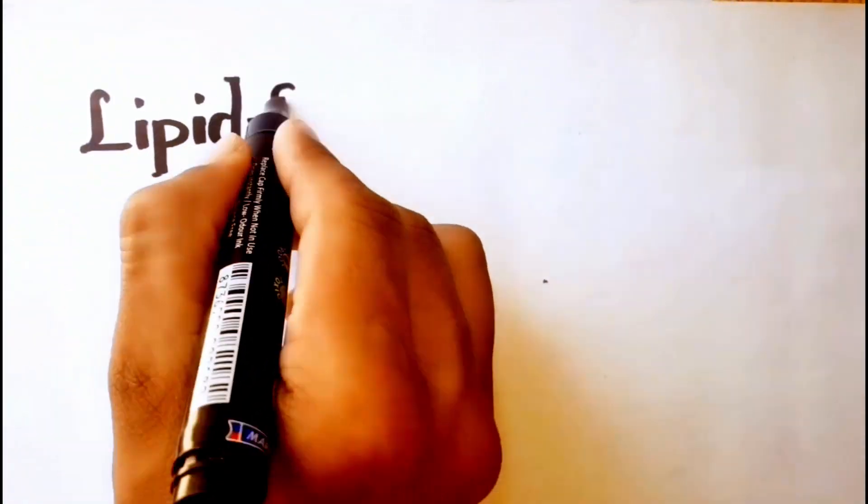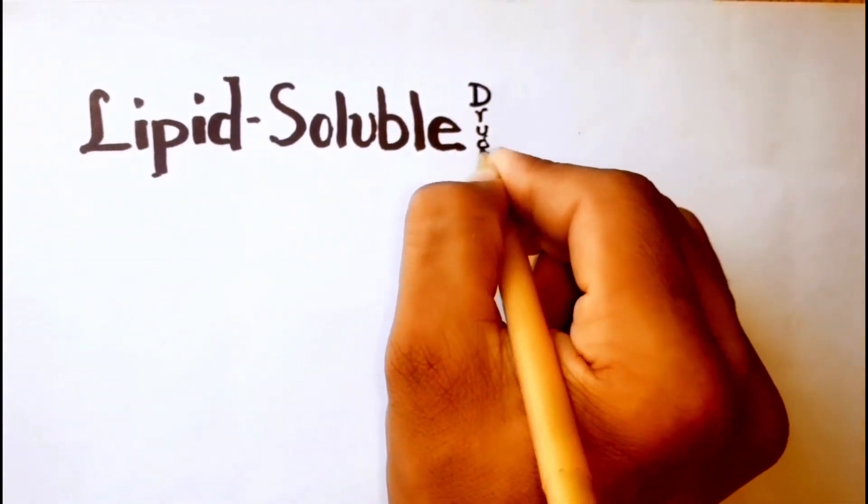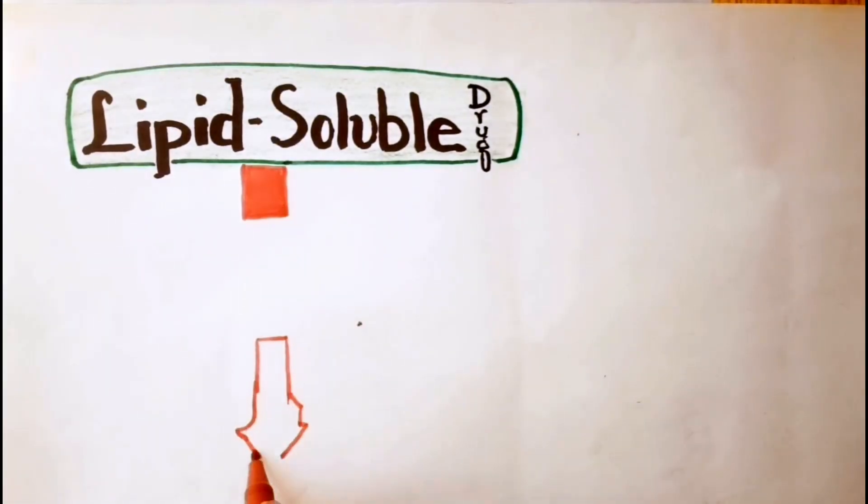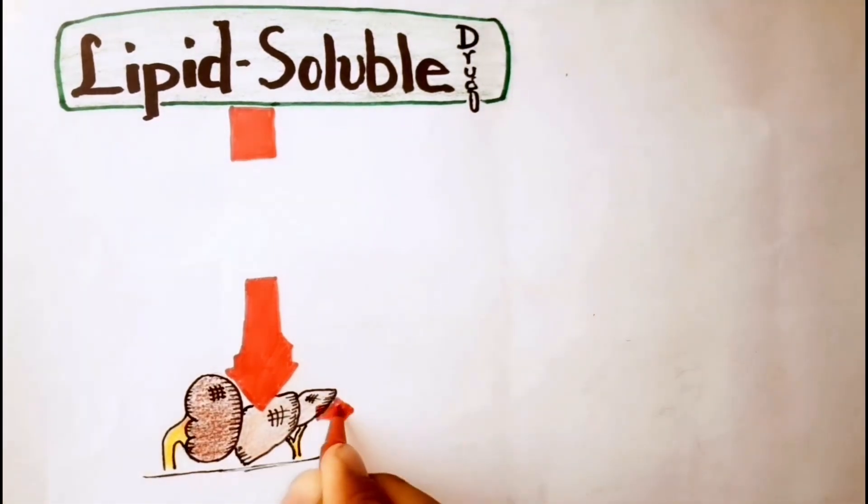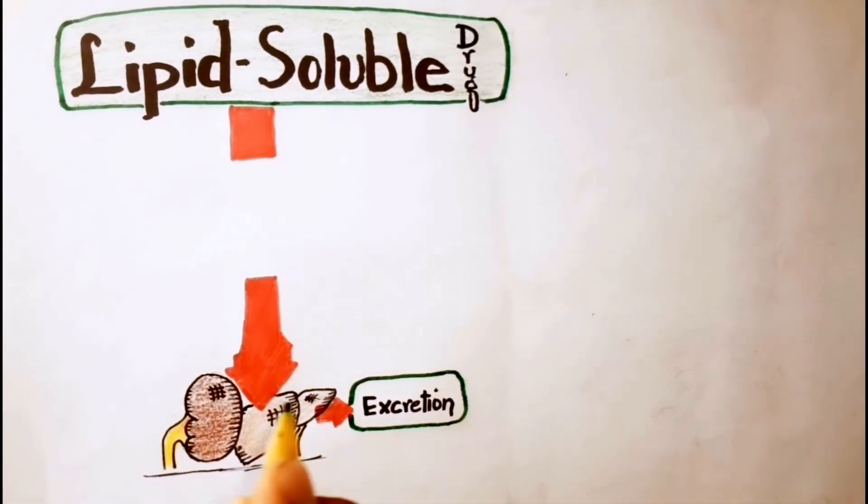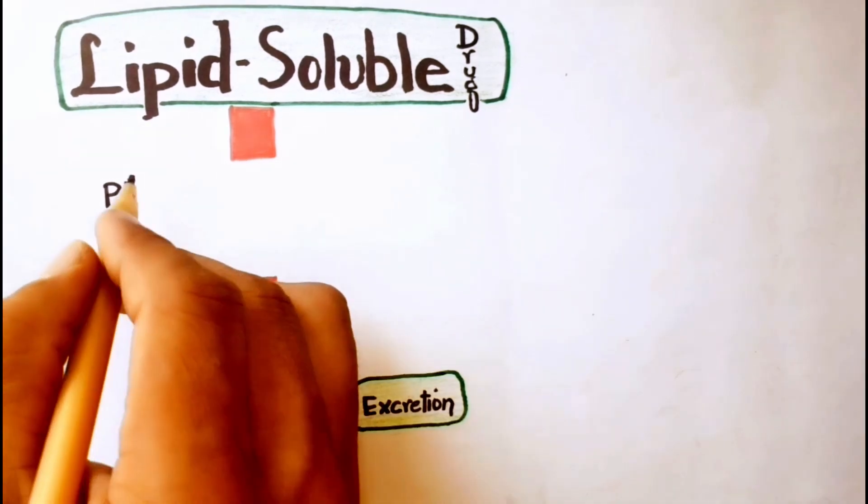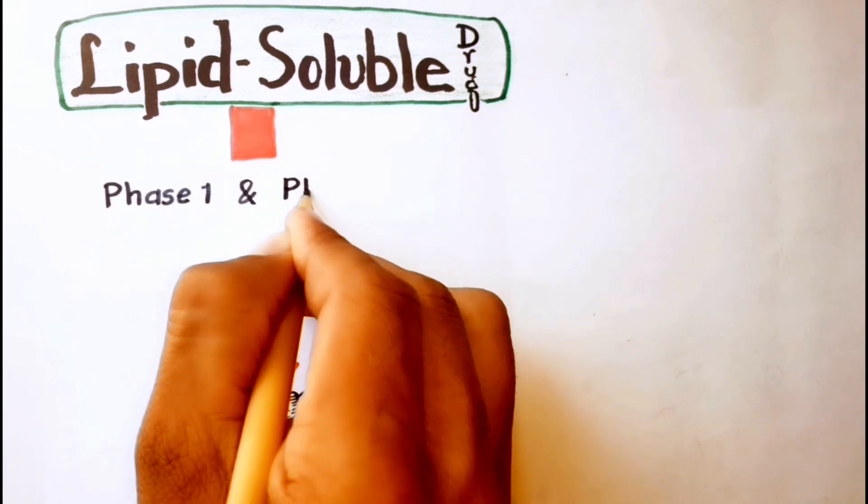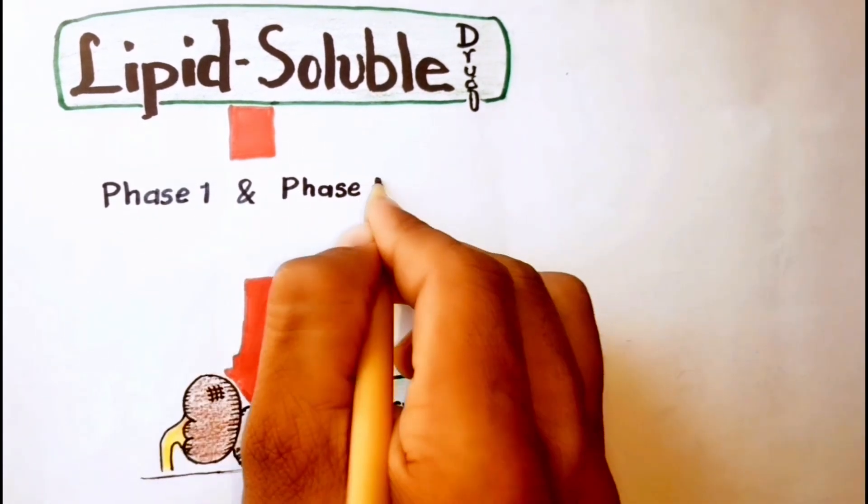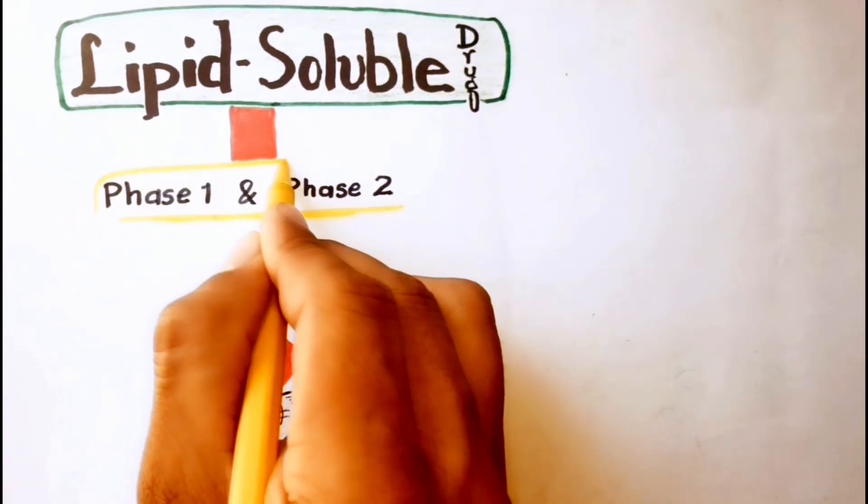Lipid-soluble drugs are first metabolized into derivatives that can be easily eliminated through the urine or bile. With very few exceptions, all drugs are subjected to metabolism through one or multiple pathways, which constitute the phase 1 and phase 2 enzymatic systems.